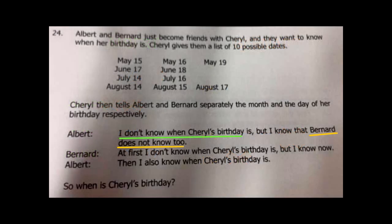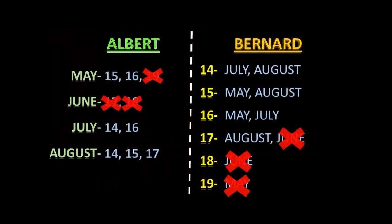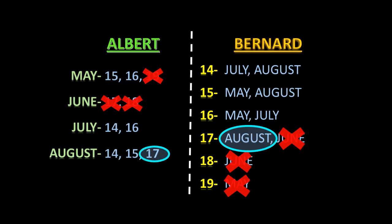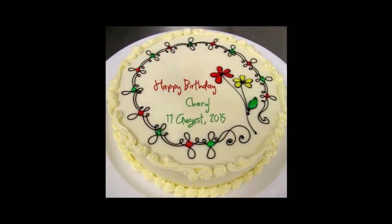Scratch June 17th from Bernard's list too. Now comes the most vital part of this question. Bernard states that at first he didn't know when Cheryl's birthday was, but after Albert's statement, he now knows it. Looking at Bernard's remaining options: 14th has July and August — still unknown; 15th has May and August — still unknown; 16th has May and July — still unknown. But look at 17th: it had August and June. Previously he didn't know which it could be. But after Albert's statement, he now knows that 17th of June can't be the date, so the remaining date is the 17th of August. And as it's clear now, the 17th of August is Cheryl's birthday.